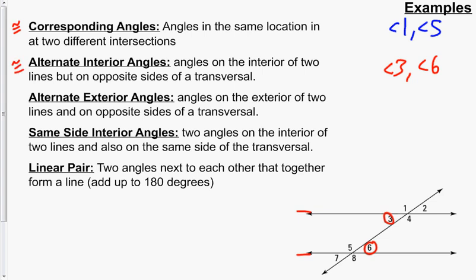Alternate exterior angles are on the exterior of the two parallel lines, but on alternate sides. So if I take angle 2 — it's on the outside of the two lines — the one that's alternate and on the outside would be angle 7, so they're completely opposite. The only other examples are 1 and 8. Those are also congruent.